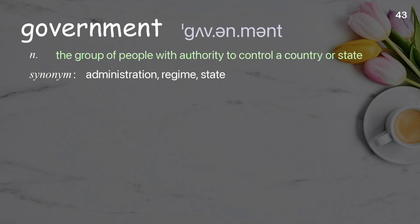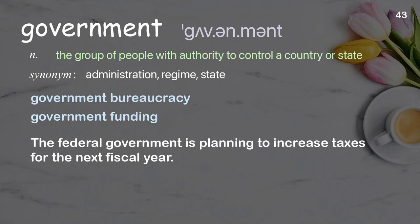Government: the group of people with authority to control a country or state. Examples: government bureaucracy, government funding. The federal government is planning to increase taxes for the next fiscal year.